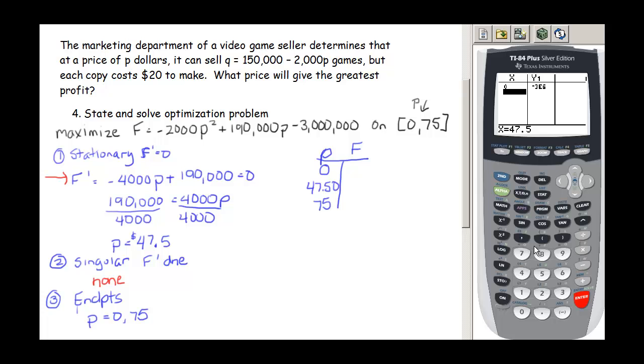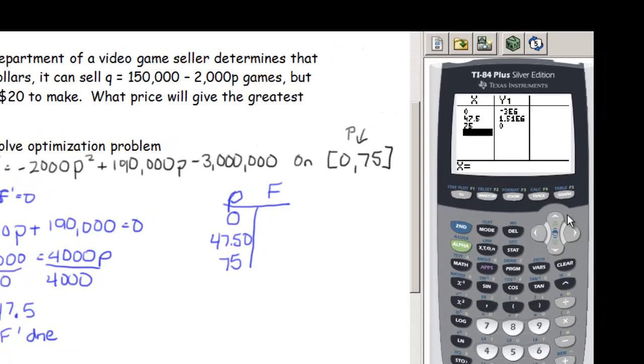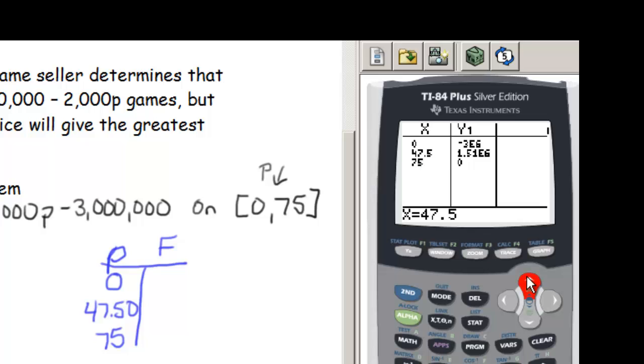0, 47.50, and 75. So if we look here, let's write down these values. Notice it gives us something a little bit weird on our Y1 here. It says negative 3E6. So that means that's the calculator shorthand for negative 3 times 10 to the 6.